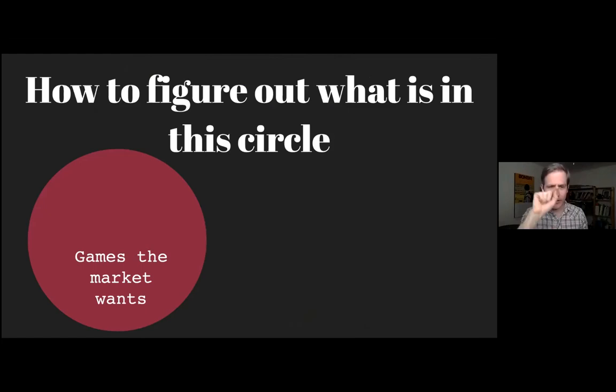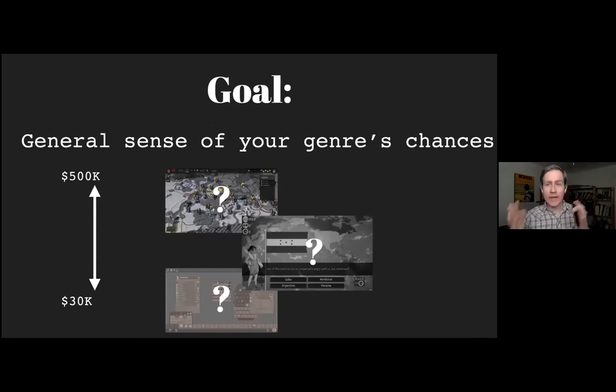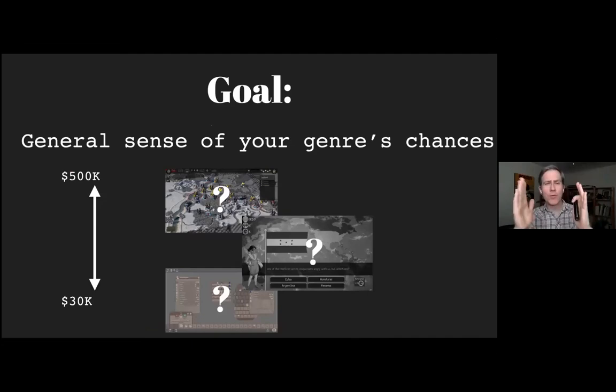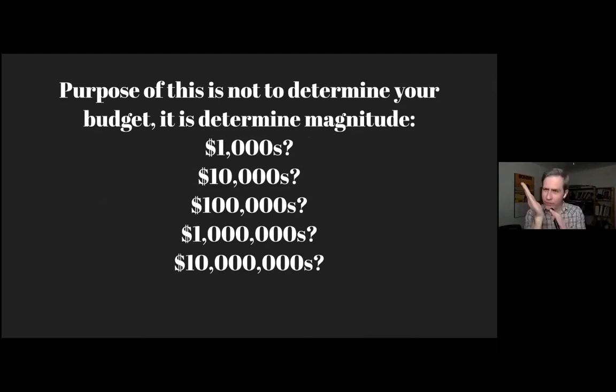How do you figure out what games the market actually wants? This isn't an exact science — we're not going to figure it down to the cent. We're going to get a range. Like, a strategy game makes between $100,000 and $500,000 — roughly. We're just looking at number of commas: is this game going to make $1,000, $10,000, $100,000, or the $10 million range? What's the class of game we're looking at?